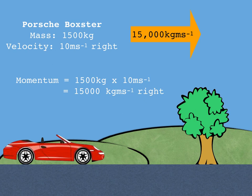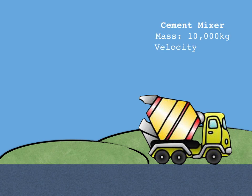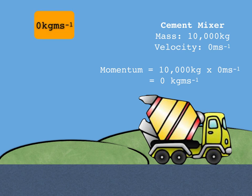Unfortunately further down the road unknown to our Porsche driver is sitting stationary a cement mixer and that cement mixer has a mass of 10,000 kilograms, 10 tons, and it's not moving, zero meters per second, which means its momentum is therefore going to be zero kgm/s. Obviously we don't need to give a direction for that because it's not moving at all.